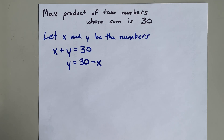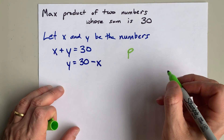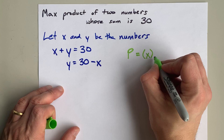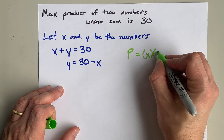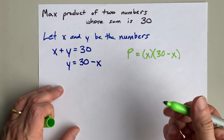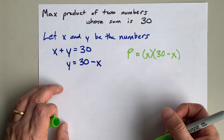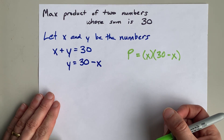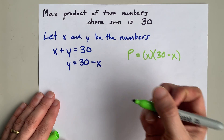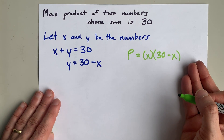Now we need to maximize the product. I'm going to call that P. The first number is x and the second number is 30 minus x — that's the product of two numbers that have to add to 30. We need to find the maximum, and there are many, many ways to do that.